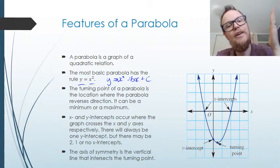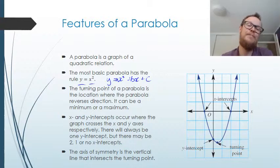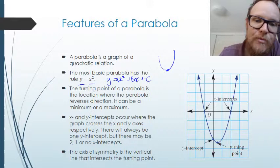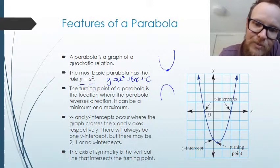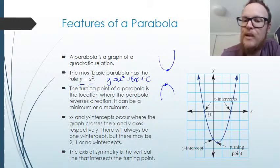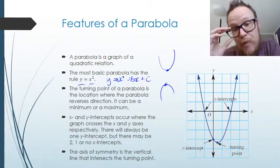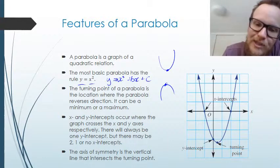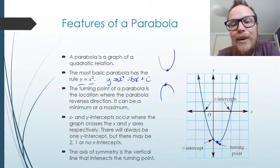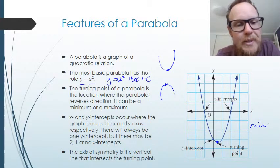The turning point of a parabola is the location where it reverses direction. It can be a minimum — where it dips down to a minimum value — or a maximum, where it has a maximum point at the top. On the graph on the right-hand side, we can see the turning point where it turns back around, and in this case we have a minimum.